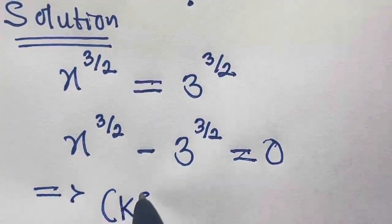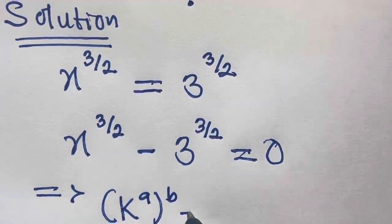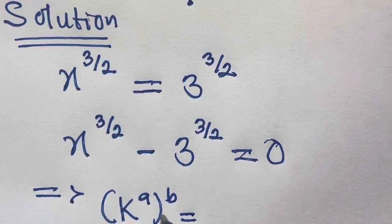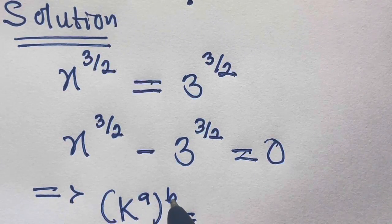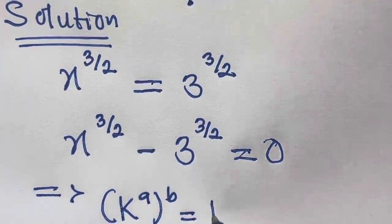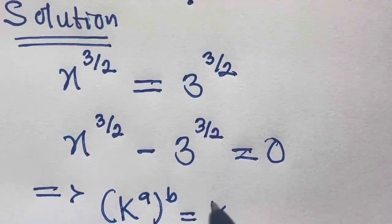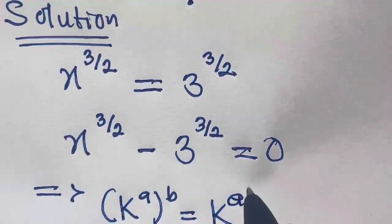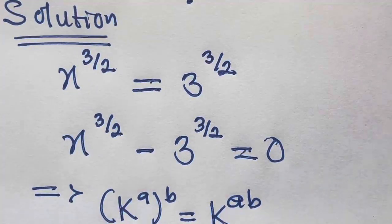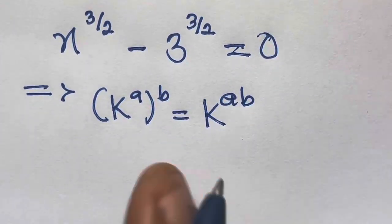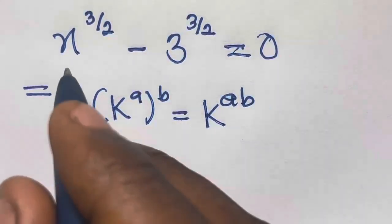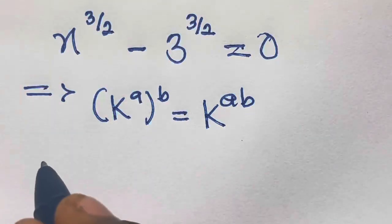Let's recall that if you have k raised to the power a, raised to the power b — from the power of a power rule, when a number raised to a certain power is again raised to another power, the powers are multiplied — so we have k^(a times b), which gives us k^(ab).